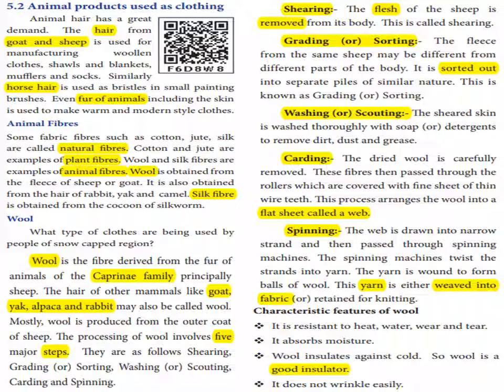Next is grading or sorting. The fleece from the same sheep may differ from different parts of the body — some brown, some white, some black. It is sorted out into separate piles of similar nature.